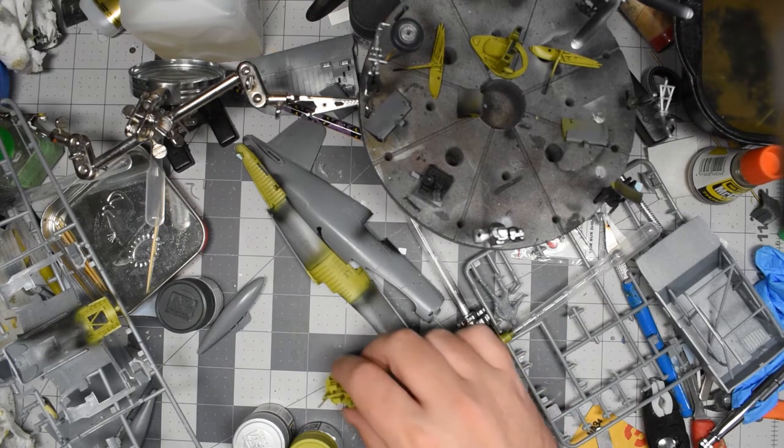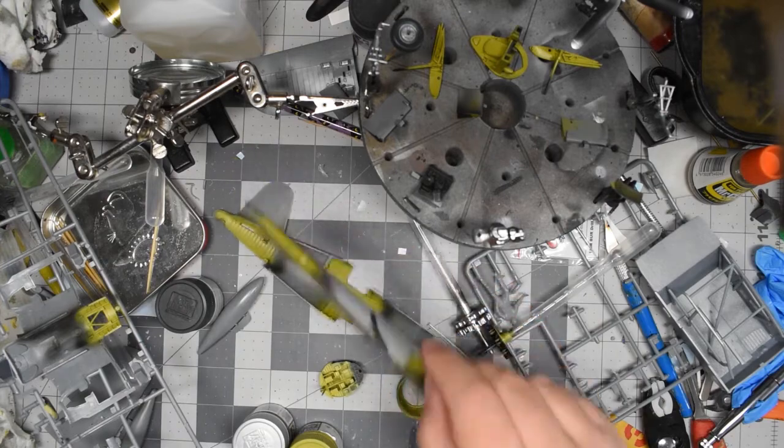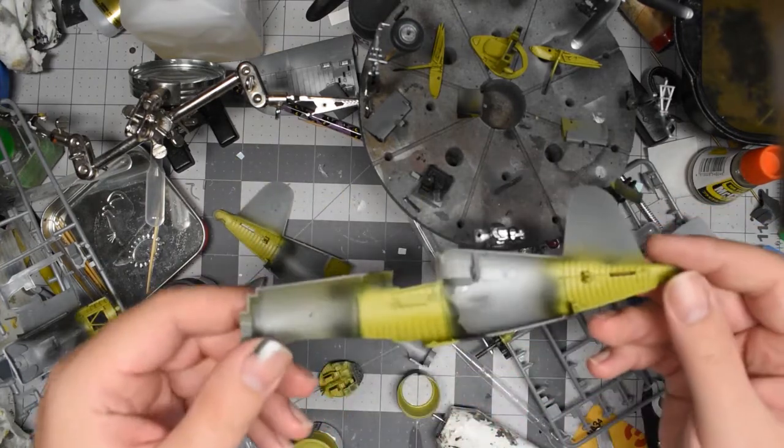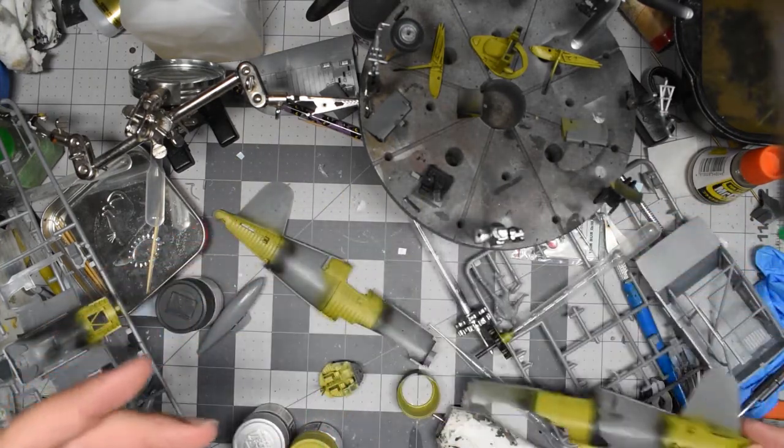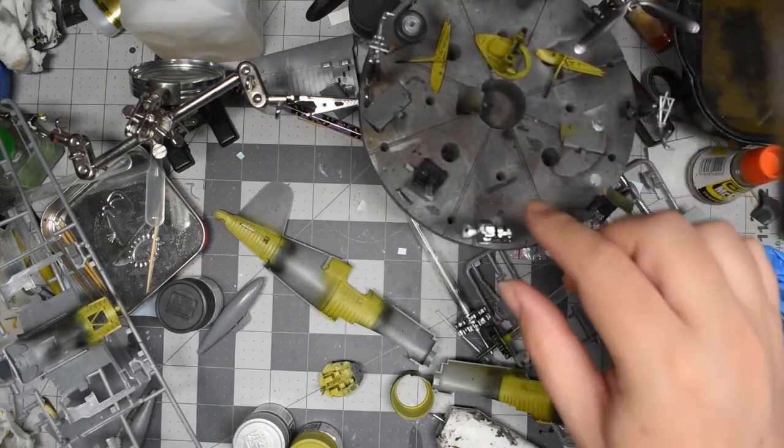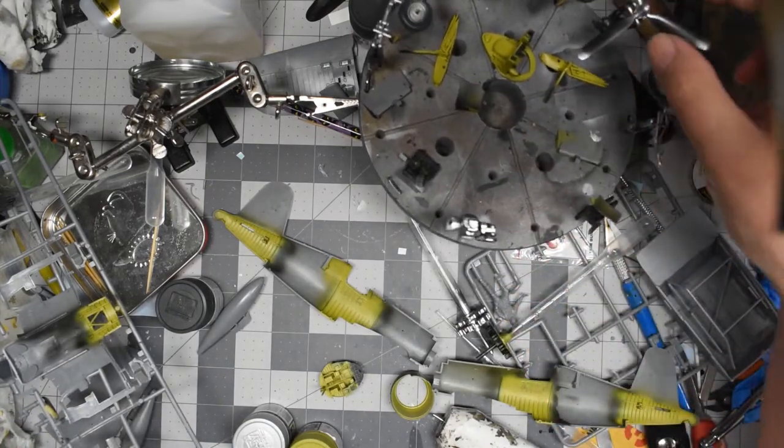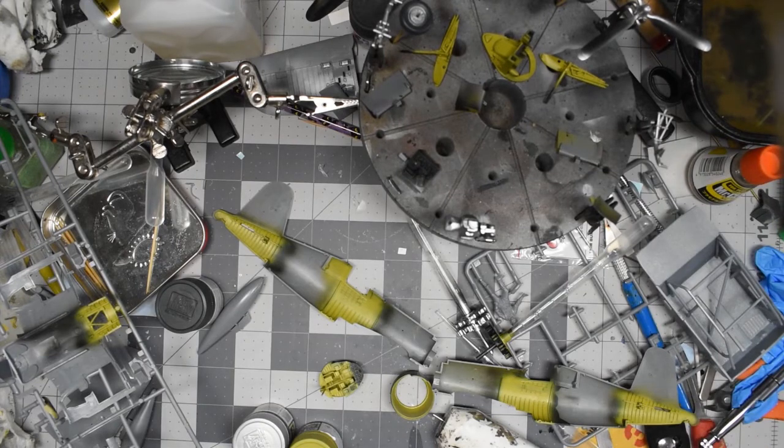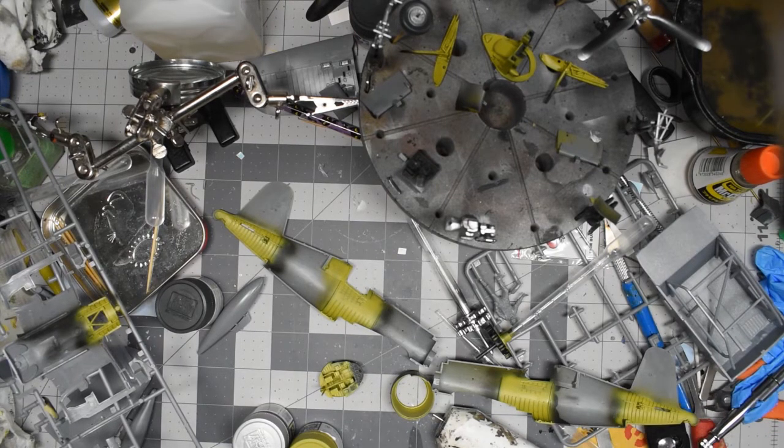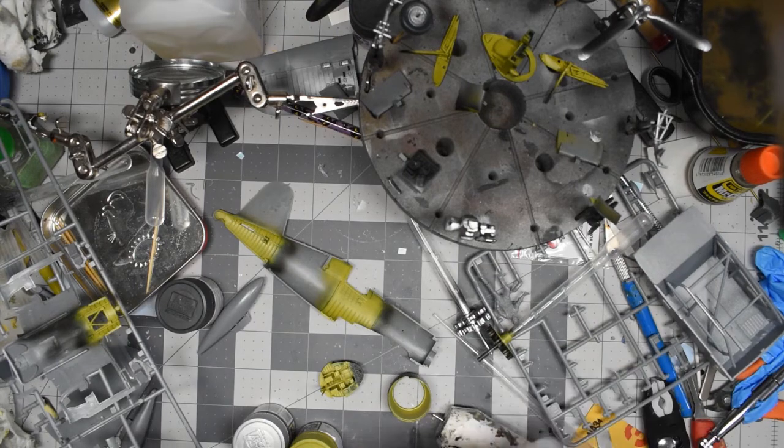But I finally sat down for a couple hours and I painted everything—primed and painted the interior yellow parts, and I painted the wheels, the tires, the landing gear. So I've got it to a point where I can start to assemble all the parts that I painted.